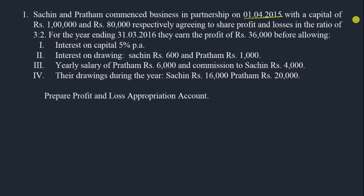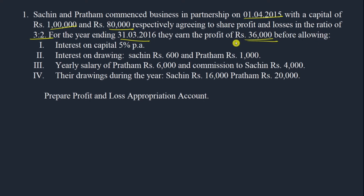Sachin and Pratham commenced business in partnership on 1st April 2015 with capitals of rupees 1 lakh and rupees 80,000 respectively, agreeing to share profit and loss in the ratio of 3:2. For the year ending 31st March 2016, they earned a profit of rupees 36,000 before allowing the following items.